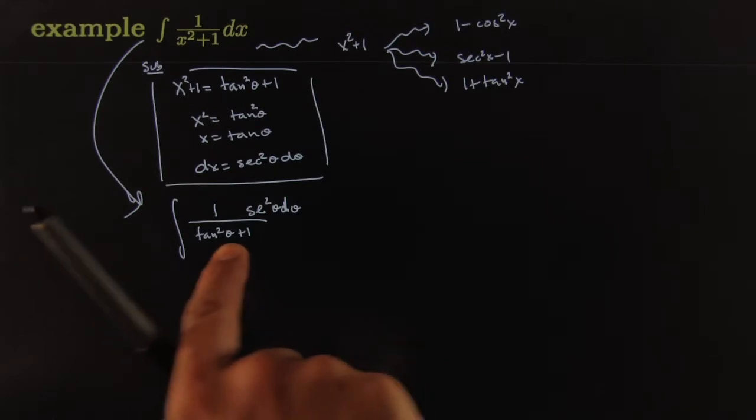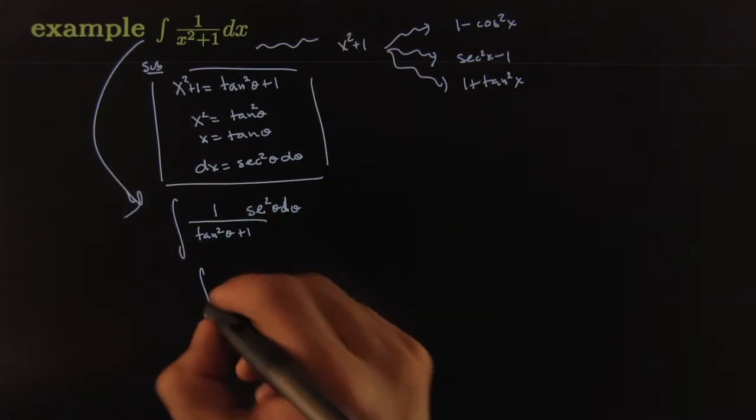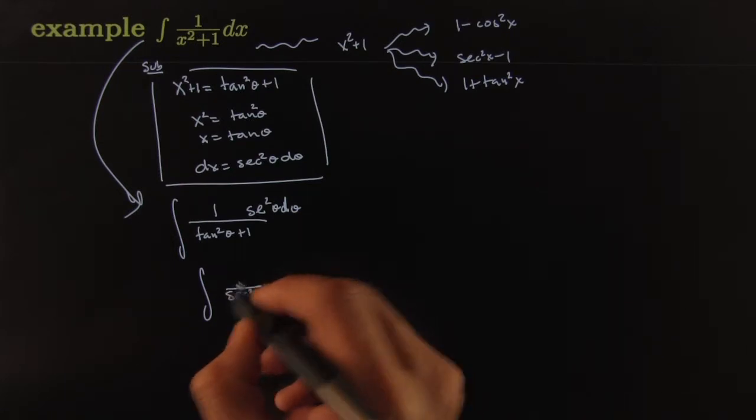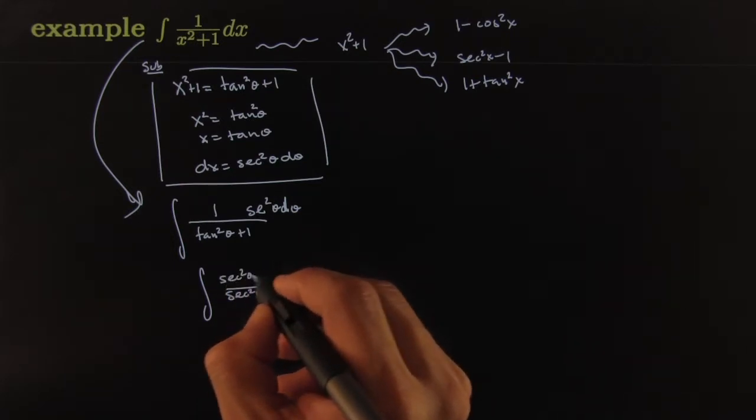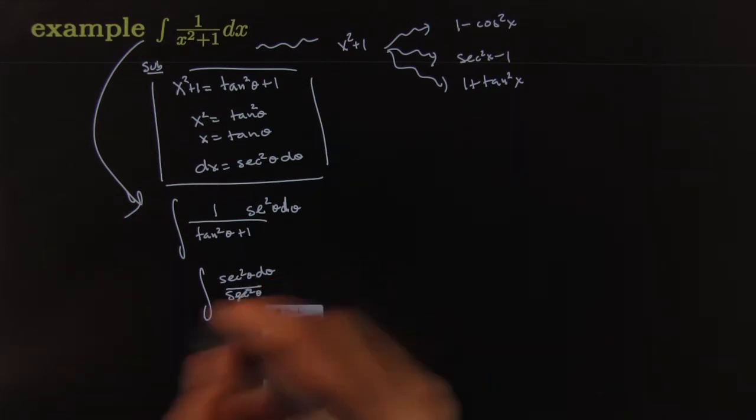And then the bottom, the beautiful thing was that we are able to exchange that for a monomial. This would become secant squared theta, and monomials play so much nicer with quotients. This becomes child's play now.